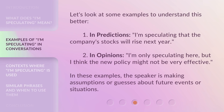Let's look at some examples to understand this better. In predictions: 'I'm speculating that the company's stocks will rise next year.' In opinions: 'I'm only speculating here, but I think the new policy might not be very effective.' In these examples, the speaker is making assumptions or guesses about future events or situations.